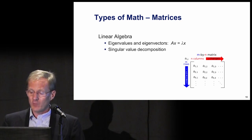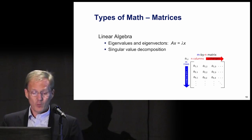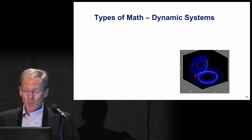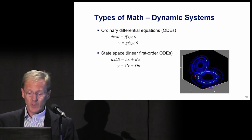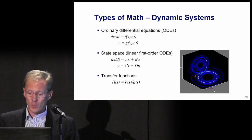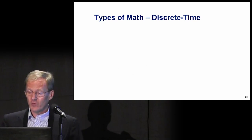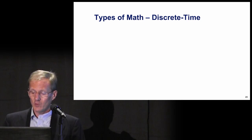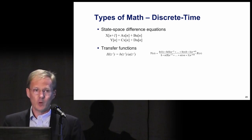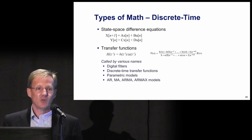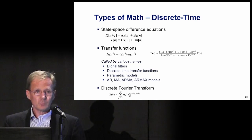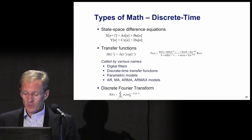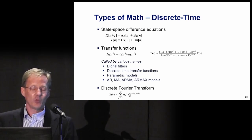As a young graduate student, I learned the years of mathematics important to control theory. These include linear algebra — particularly eigenvalues and the SVD — ordinary differential equations to model dynamic systems, the linear time-invariant state space case and transfer function forms, the discrete-time equivalents including state space and transfer function forms, which go by names like digital filter, signal processing, or ARMA if you're an economist. Also the FFT. This short list of mathematics is very important to the study and practice of controls and signal processing. They formed what you might call a set of golden equations.